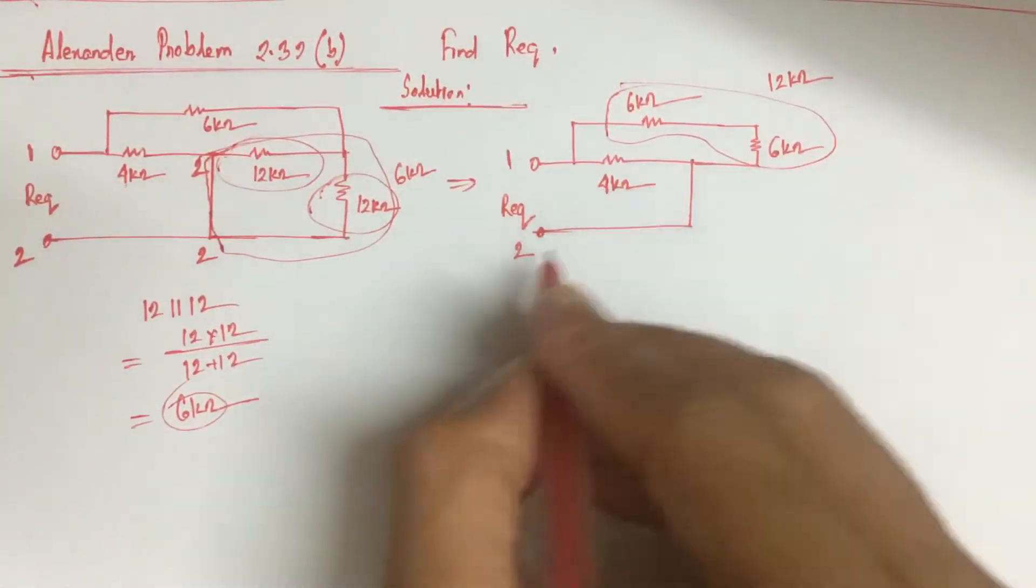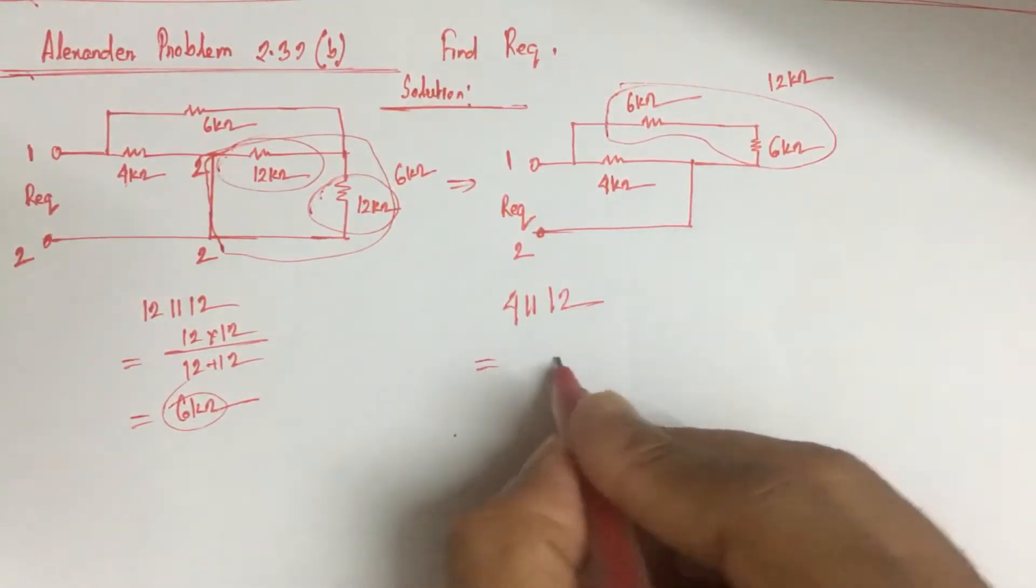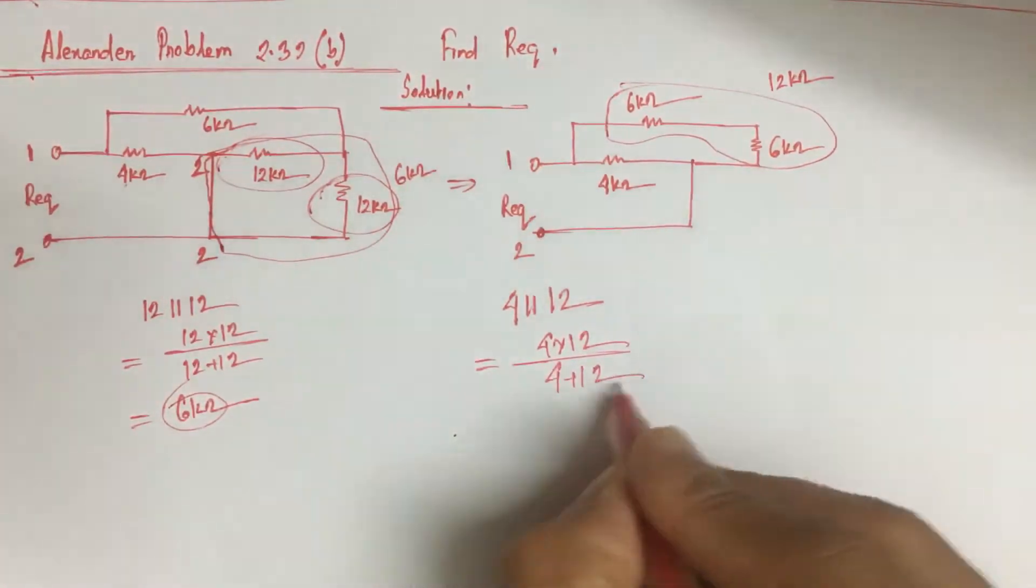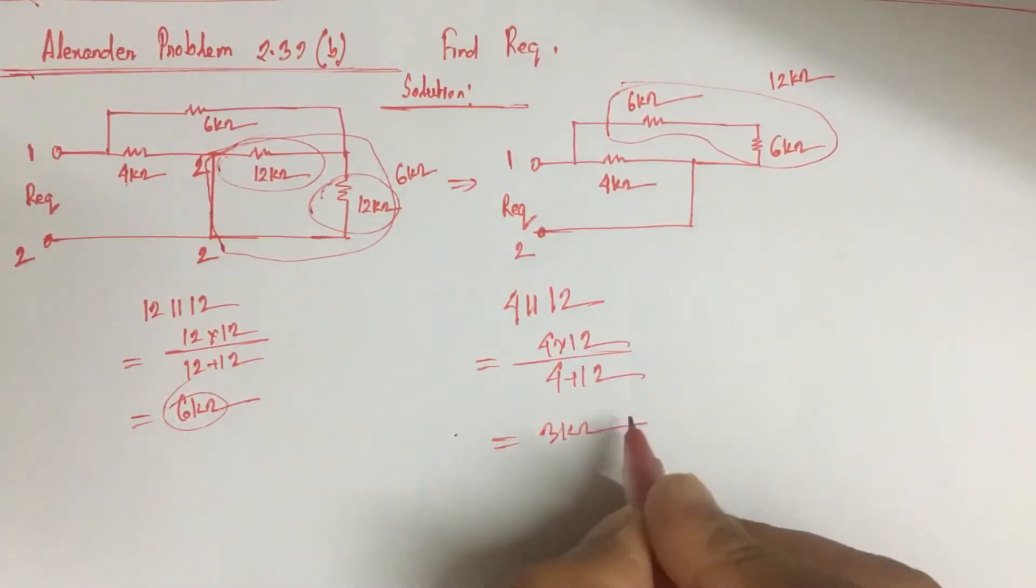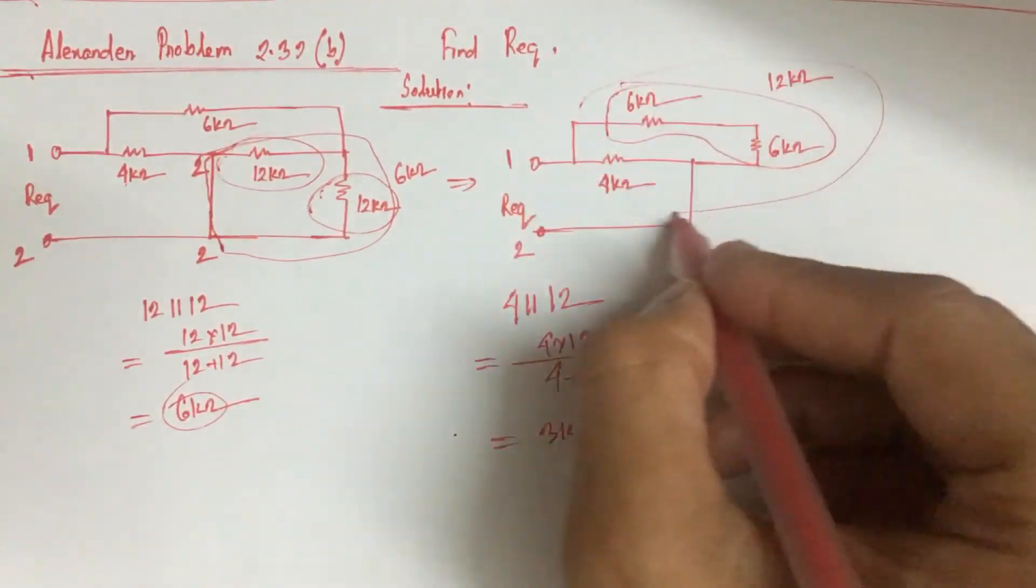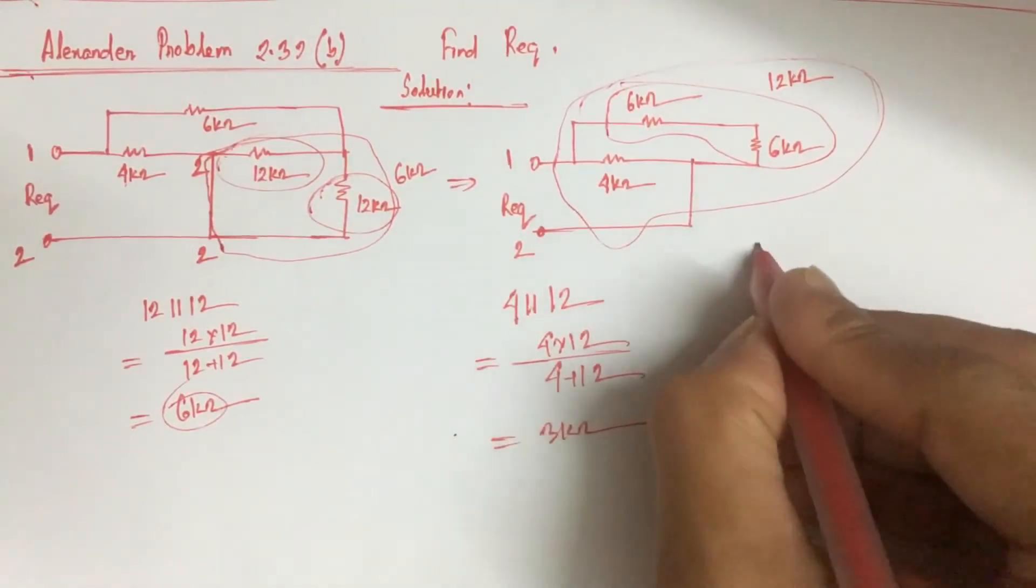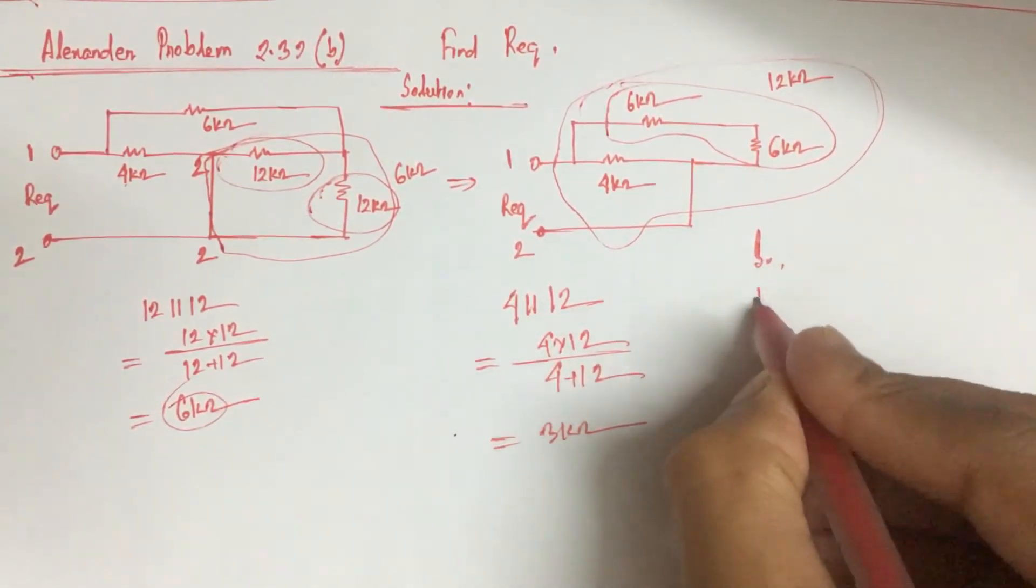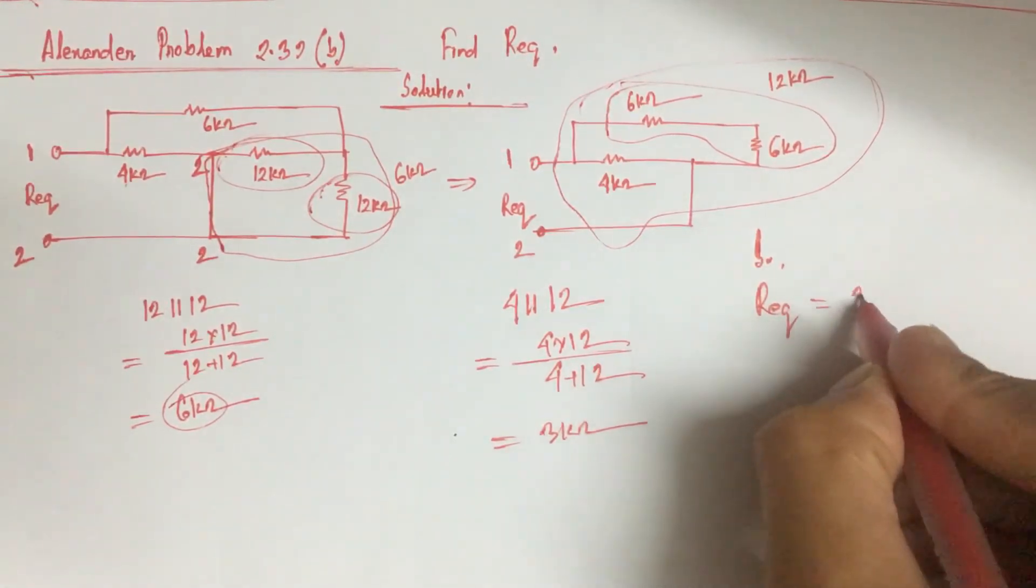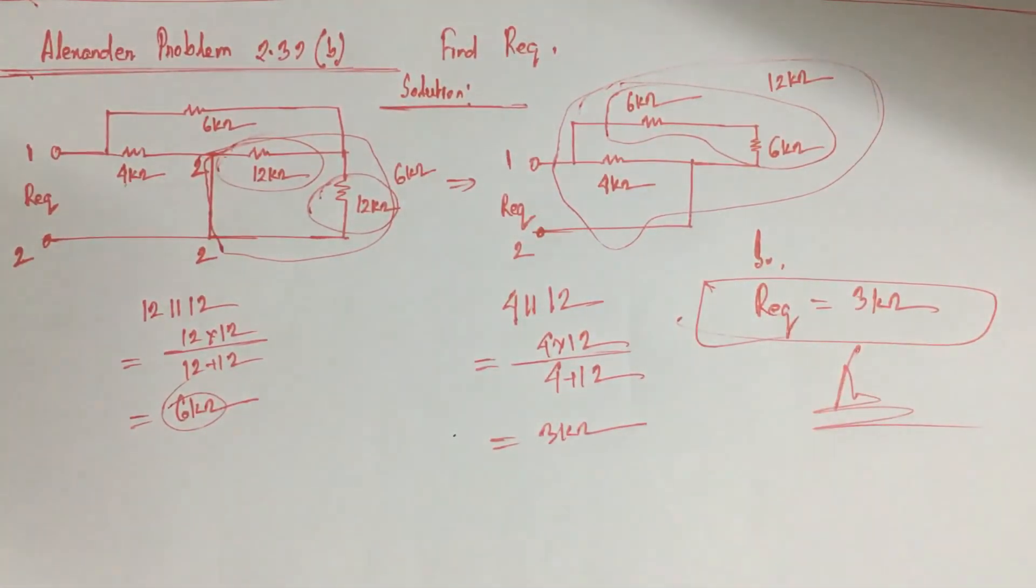So 4 and 12 kohm resistances in parallel will be replaced by 3 kohm. So the equivalent resistance of this whole resistance is 3 kohm. So our equivalent is equal to 3 kohm. This is the answer. Thank you.